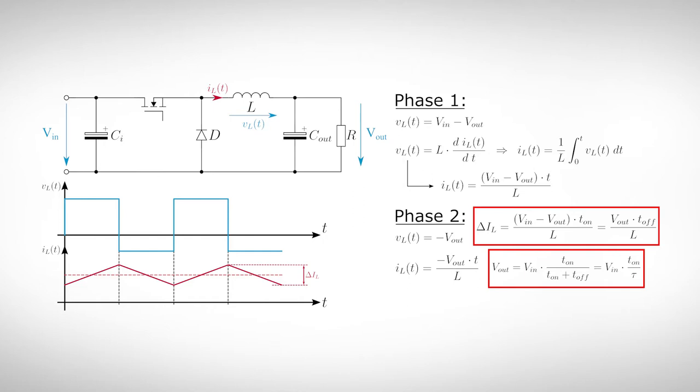If we combine the two equations, we get the formula for the ripple current. In addition, we can derive an equation for the output voltage independent of the input voltage. The great thing about this equation is that the output voltage is related to the input voltage solely via the duty cycle.